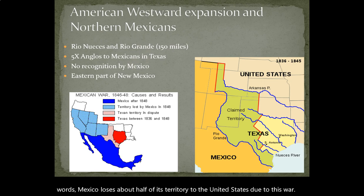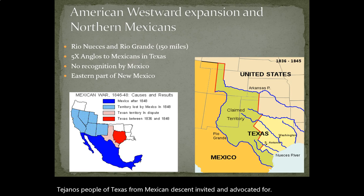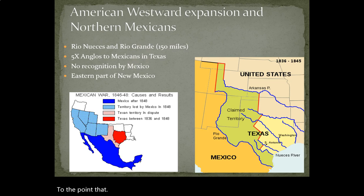Before the Texas issue, Mexico had a very small population of people living in Texas. Tejanos — people of Texas from Mexican descent — invited and advocated for the admission of Anglos into Mexican Tejas, to the point that Anglos came in large numbers, and at one point there were five Anglos to every Mexican by around 1830. This is what eventually leads to the Texas independence movement.